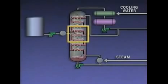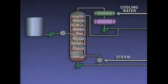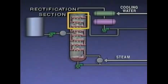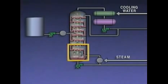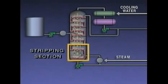Not every distillation tower is designed in the exact same way. However, every tower can be divided into three basic sections. The middle section is where the feed enters the tower and part of the feed vaporizes — commonly known as flashing — so this section is often called the flash zone. The section above the flash zone is called the rectification section, where the concentration of lighter components increases. The section below the flash zone is called the stripping section, where the lighter components are vaporized or stripped from the heavier liquid. If a distillation tower worked perfectly, it would produce pure products, but the lighter products usually contain some heavier fractions and vice versa — this is sometimes referred to as overlap.